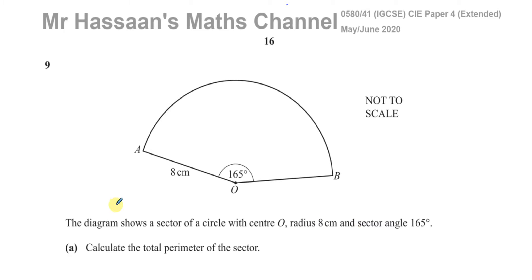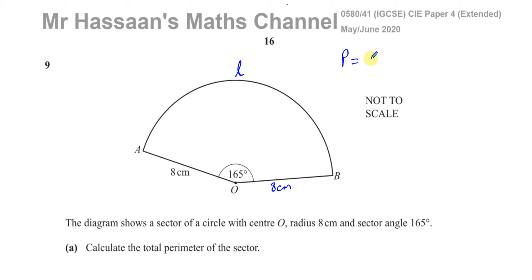We have to find the total perimeter of the sector. The perimeter is the length of the outline of the shape, so it includes the two straight lines which are both the radius, and also the length of the arc going from A to B. The perimeter of a sector is given by two times the radius plus the length of the arc.